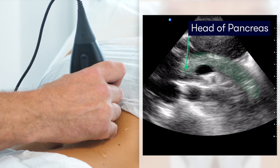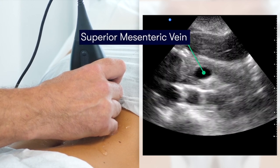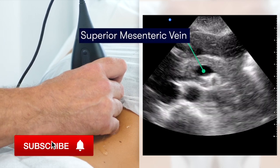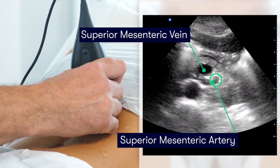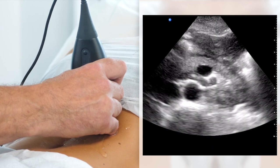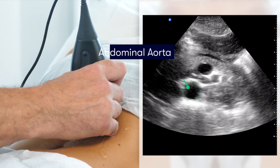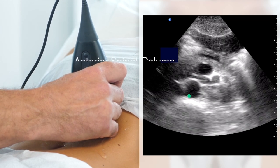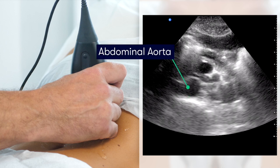Scanning a little bit more inferiorly, we come to the head of the pancreas, which is located where the splenic vein joins with the superior mesenteric vein. Continuing to scan more inferiorly, we can see in the middle of the screen the superior mesenteric vein, and just to the side is a small round structure which is the superior mesenteric artery. Deep to the artery, in the middle of the image, is the pulsating abdominal aorta. Even deeper, a bright horizontal line marks the anterior part of the vertebral column, showing just how posterior the abdominal aorta really is.